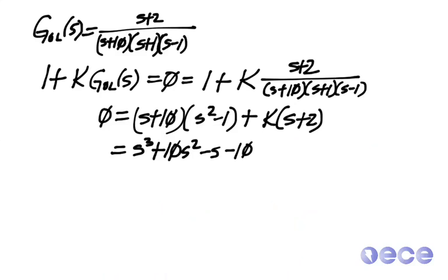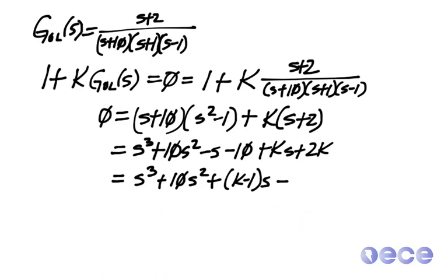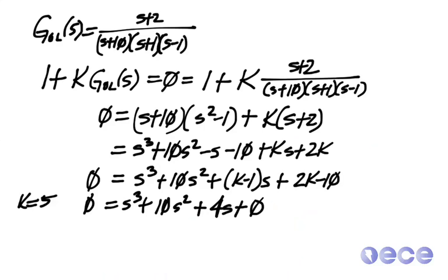We multiply the denominator through, put all the pieces together, and now we're going to end up with k minus 1 times s plus 2k minus 10 equals zero. We know the place where we'd like for the poles to be. We're just going to pick some values of k and see how close we can get.